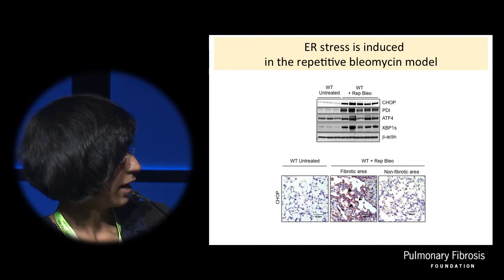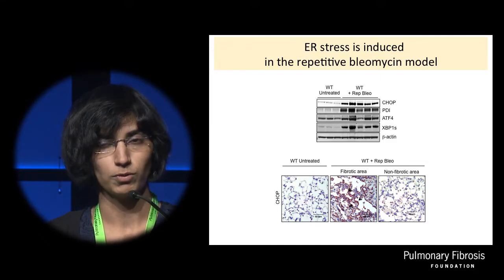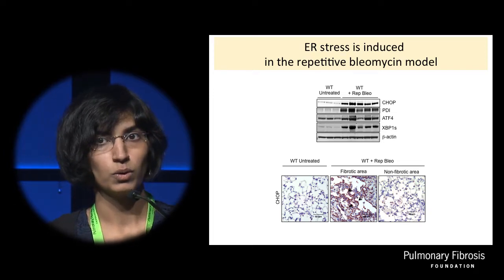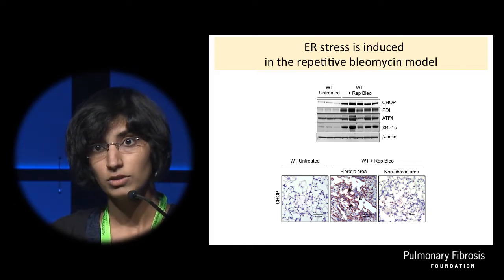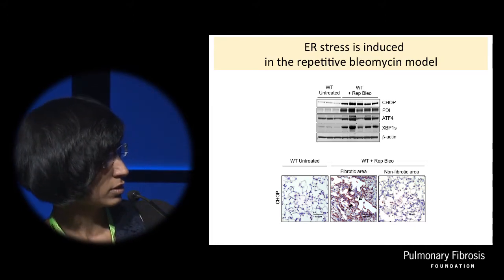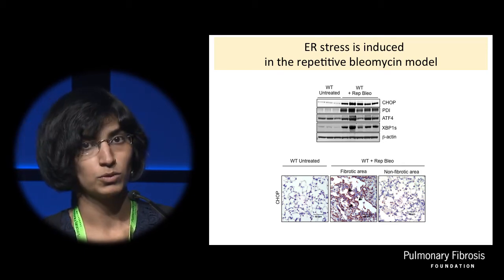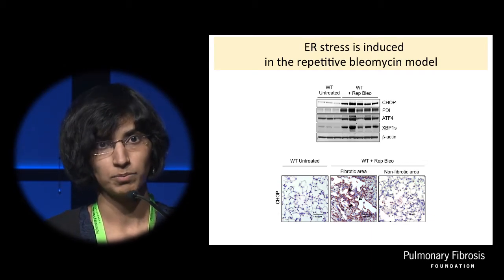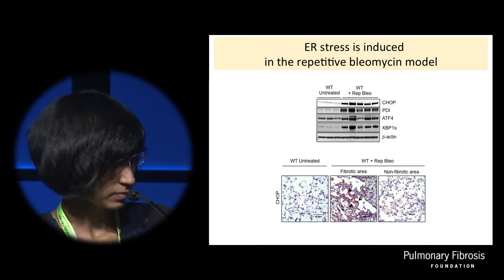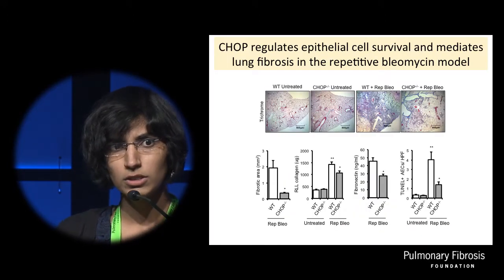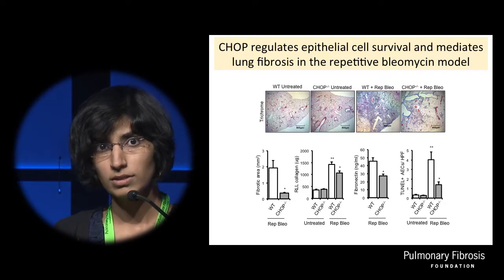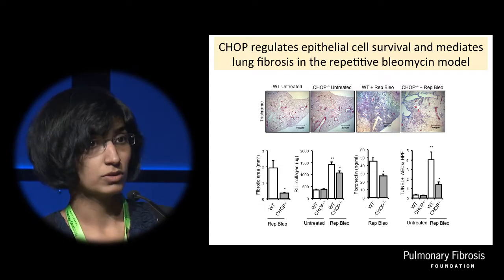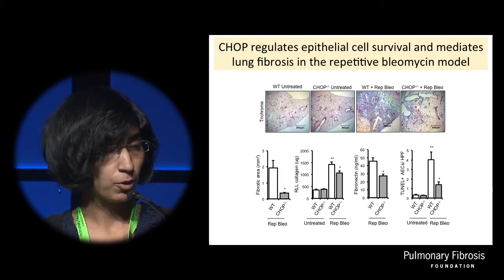We then stained for ER stress markers to look at induction of ER stress in this model. Western blots show induction of various ER stress markers in the lungs of mice treated with repetitive bleomycin, and this also includes CHOP. Looking at the immunostainings, it was very interesting that there was very prominent CHOP staining in hyperplastic type 2 AECs around areas of fibrosis. This showed that repetitive bleomycin causes severe fibrosis associated with increased ER stress, and CHOP was especially upregulated and prominently expressed in these cells.